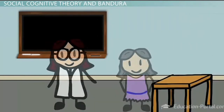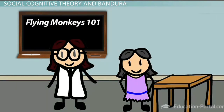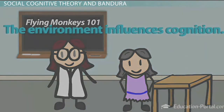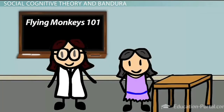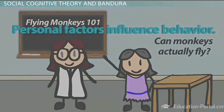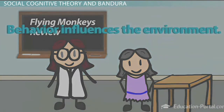Here is a classroom example to help make this point more clear. In the classroom, as a teacher presents a lesson to the class, students reflect on what the teacher is saying. This is where the environment influences cognition, a personal factor. Students who don't understand raise their hands to ask a question — this is where personal factors influence behavior. So the teacher reviews the point, and behavior influences the environment.